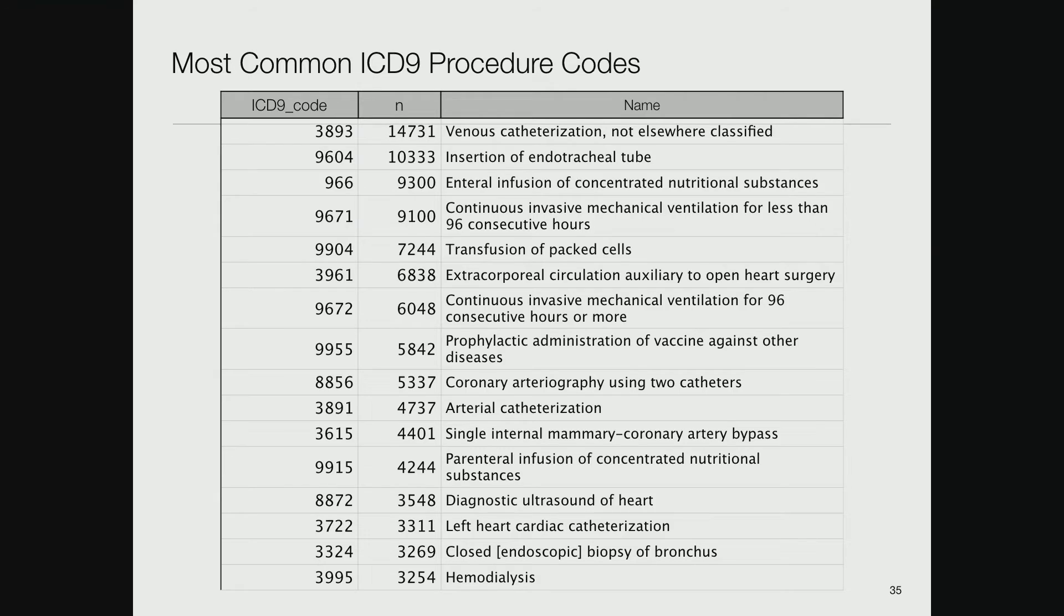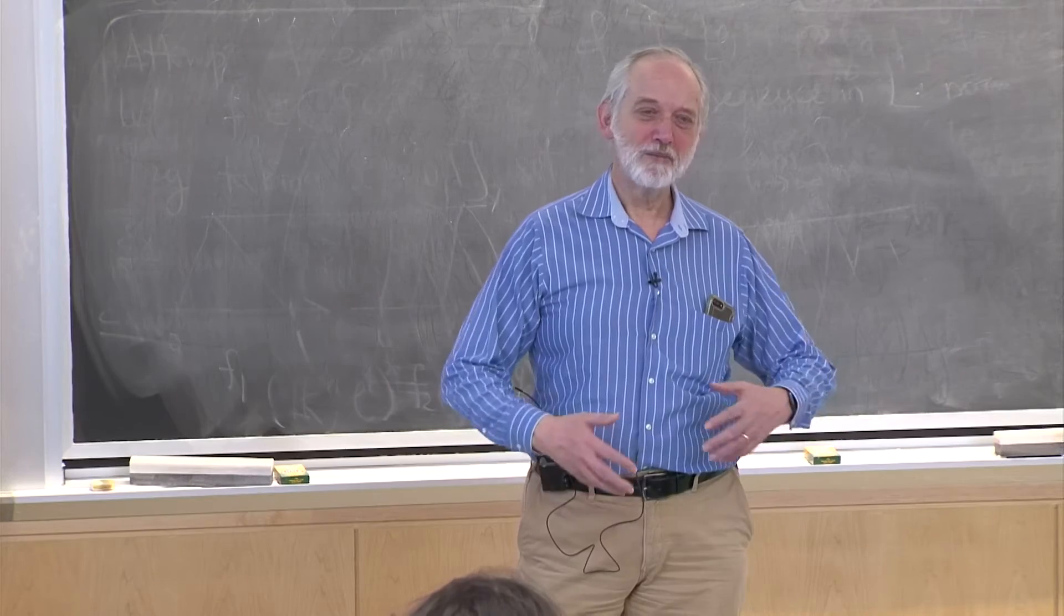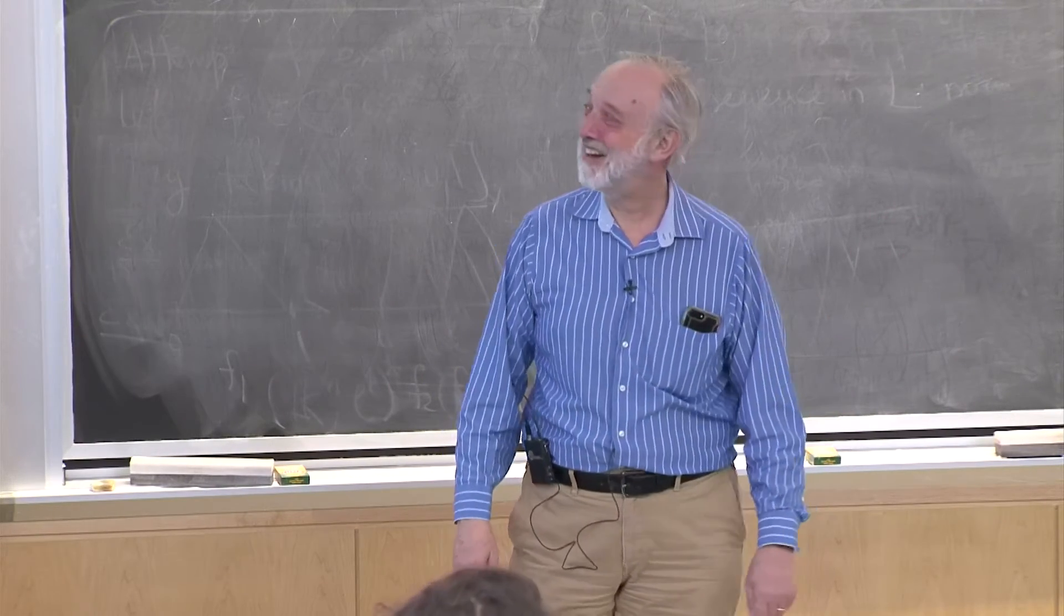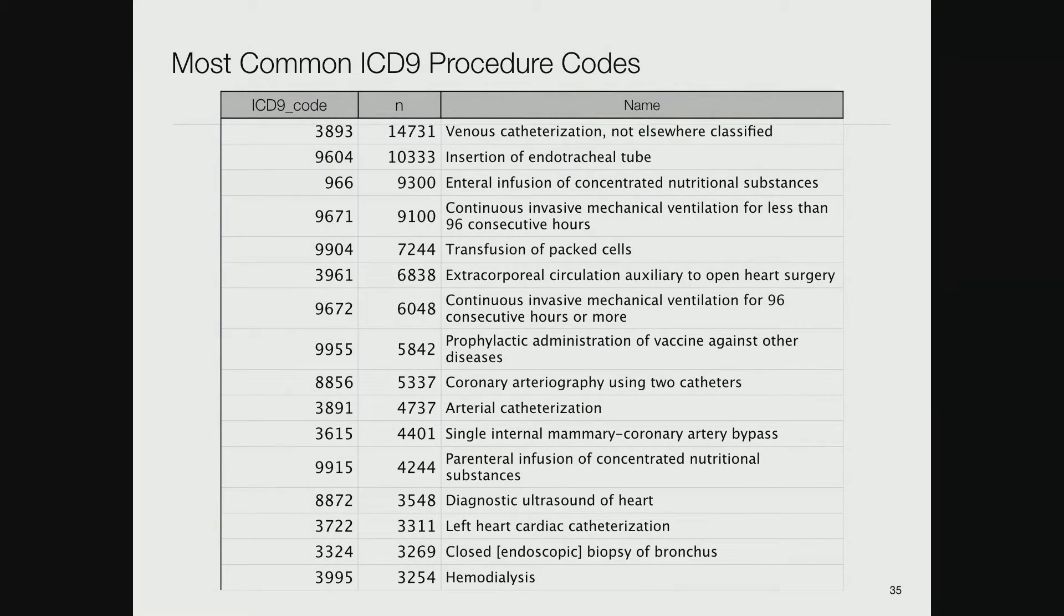Most common ICD-9 procedure codes: code 3893, 14,000 instances, is venous catheterization not elsewhere classified. That's when somebody sticks an IV in your vein. Very common. You show up at a hospital, they stick an IV in your arm. That's a billable event too.